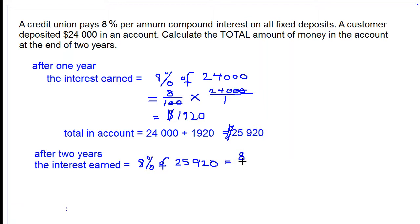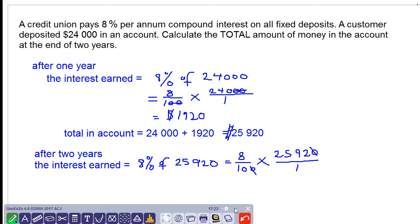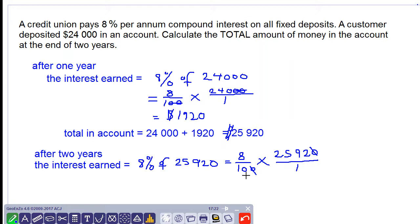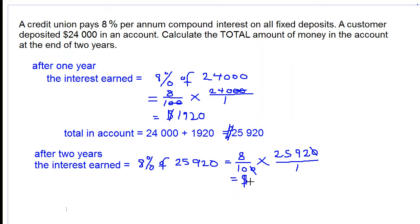So we need to work this out. We have 8 over 100 multiplied by 25,920 over 1. We're going to cancel two zeros here, so 8 multiplied by 25,920 over 10. Let's work that out. Now we get $2,073.60. This is the amount of interest earned.